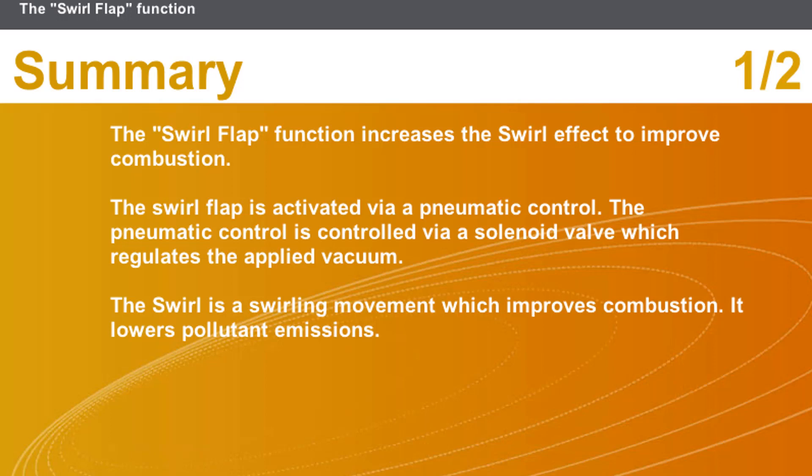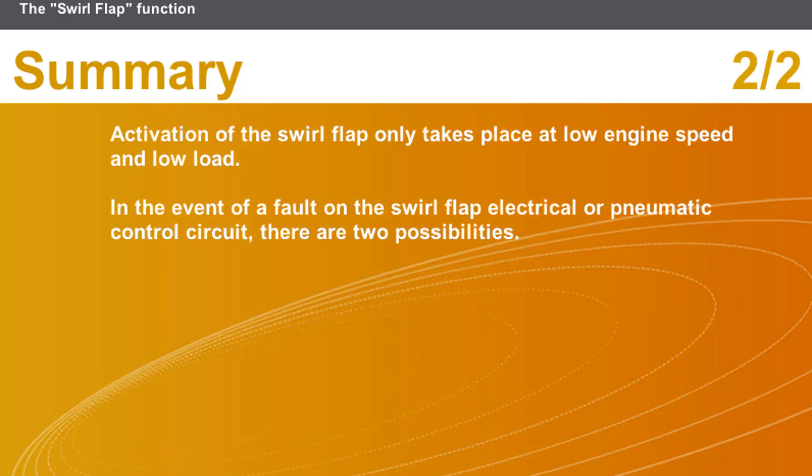The swirl flap function increases the swirl effect to improve combustion. The swirl flap is activated via a pneumatic control. The pneumatic control is controlled via a solenoid valve, which regulates the applied vacuum. The swirl is a swirling movement which improves combustion and lowers pollutant emissions. Activation of the swirl flap only takes place at low engine speed and low load. In the event of a fault on the swirl flap electrical or pneumatic control circuit, there are two possibilities.